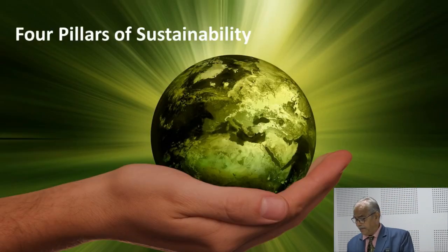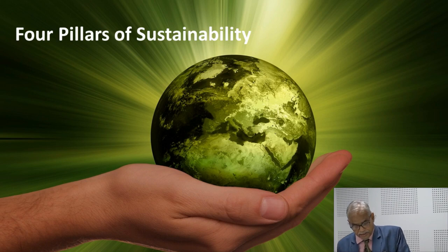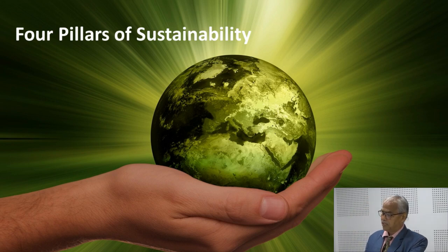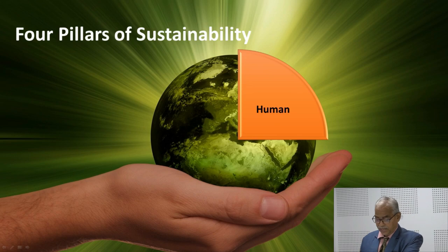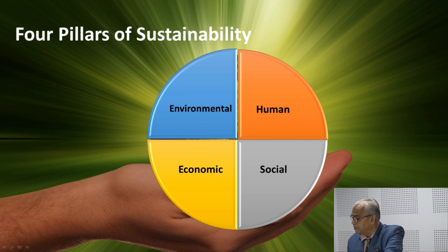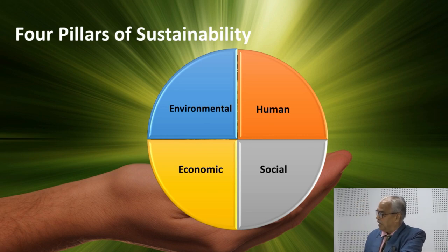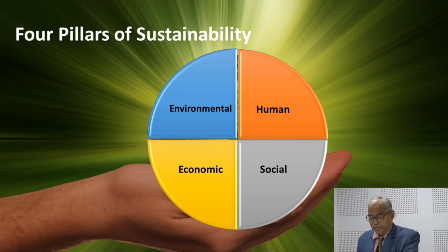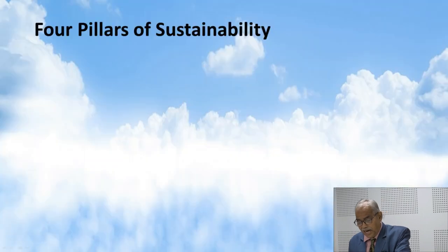These dimensions are to be covered through sustainable development. We previously talked about the four pillars of sustainability: environment, human, social, and economic. These four dimensions — human, social, economic, and environmental — are directly linked with sustainability.